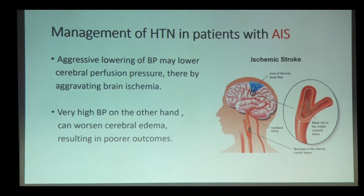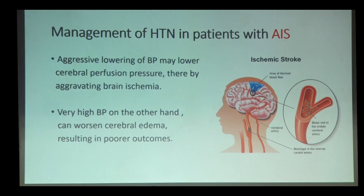Regarding management of hypertension in patients with acute ischemic stroke, aggressive lowering of BP may lower cerebral perfusion pressure, thereby aggravating brain ischemia. Very high BP, on the other hand, can worsen cerebral edema, resulting in poor outcome.